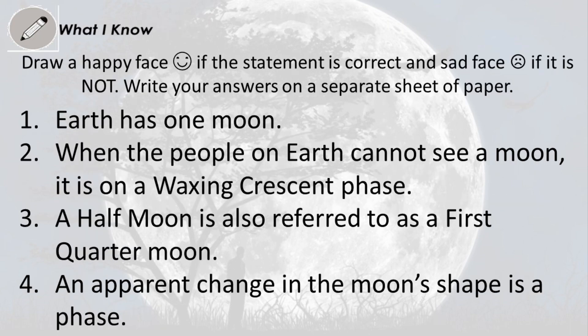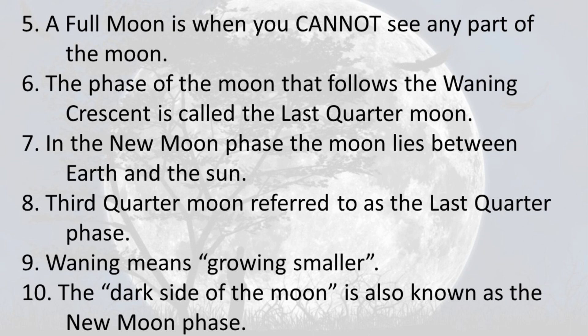Draw a happy face if the statement is correct and a sad face if it is not. Write your answers on a separate sheet of paper. 1) Earth has one moon. 2) When people on Earth cannot see a moon, it is on a waxing crescent phase. 3) A half moon is also referred to as a first quarter moon. 4) An apparent change in the moon's shape is a phase. 5) A full moon is when you cannot see any part of the moon. 6) The phase of the moon that follows the waning crescent is called the last quarter moon. 7) In the new moon phase, the moon lies between Earth and the Sun.